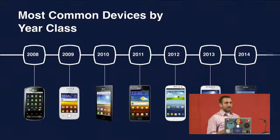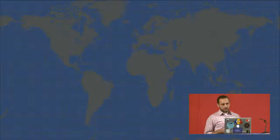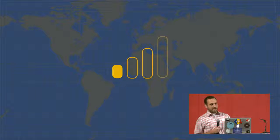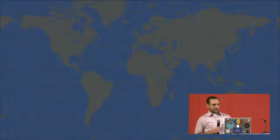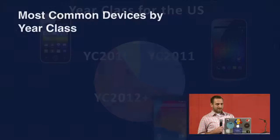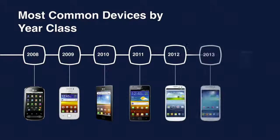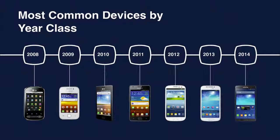As engineers, instead of worrying about 10,000 different devices, you really only need to worry about two or three. You need to have a 2011 device, a 2010 device like a Pocket Neo, and then the device that's in your pocket — which is usually four cores or more and a decent speed.